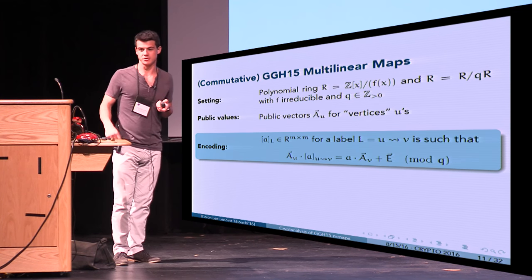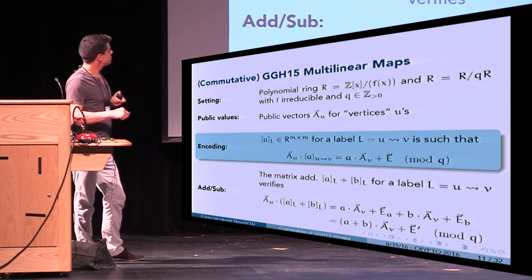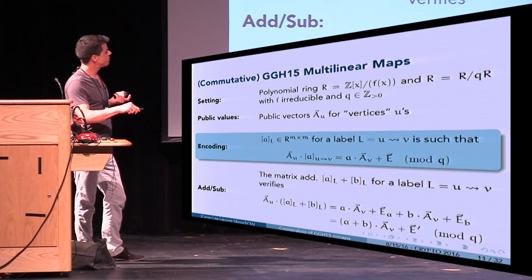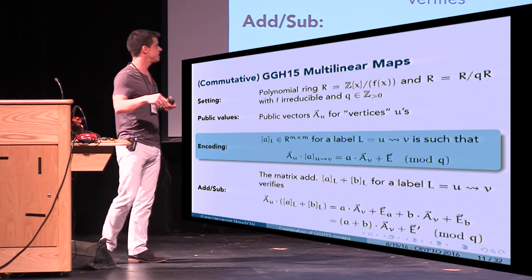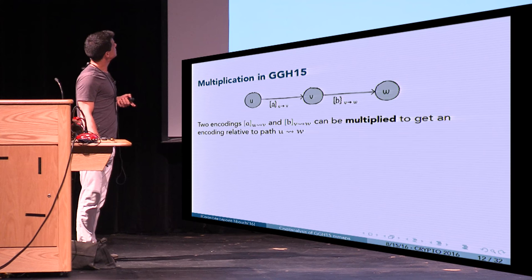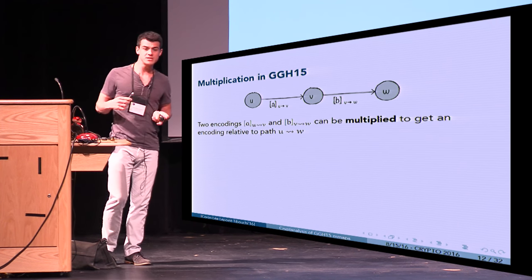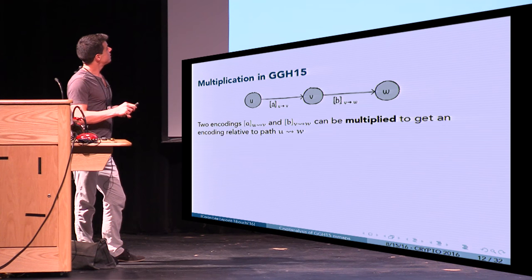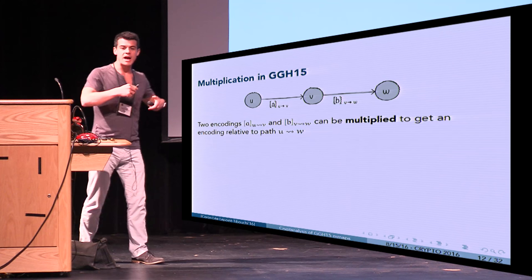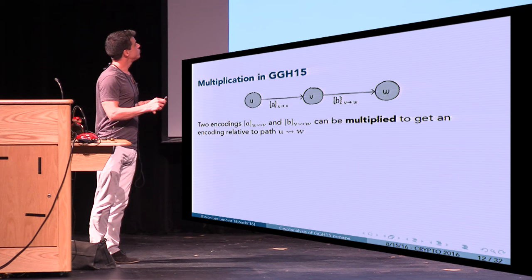You can add or subtract: taking two such matrices for the same label and multiplying on the left by a_u gives a times a_v plus b times a_v, i.e., (a+b) times a_v plus a noise vector. Multiplication is possible when paths are compatible: if you have an encoding for path u→v and an encoding for path v→w, you can obtain an encoding for path u→w.